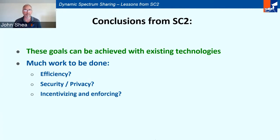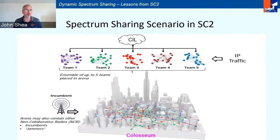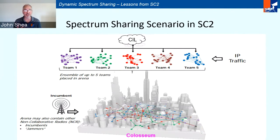The main conclusion we took from the SC2 is that real-time distributed spectrum sharing is feasible today with existing technologies — well demonstrated if you watched the SC2 championship event. At the same time, there's still a lot of work to be done to improve efficiency, ensure privacy and security, and develop schemes that will incentivize desired spectrum usage behaviors and enforce violations of spectrum usage policies. In a typical SC2 spectrum sharing scenario, there are up to five teams or networks of radios communicating in a frequency band, each team having 10 radios — so 50 different radios trying to access the same spectrum. Additionally, many scenarios contain non-collaborative radios such as incumbents and jammers, and a lightweight collaboration protocol called the SIL allows teams to exchange limited information such as spectrum usage and geolocations.